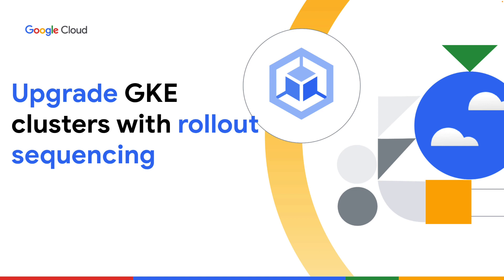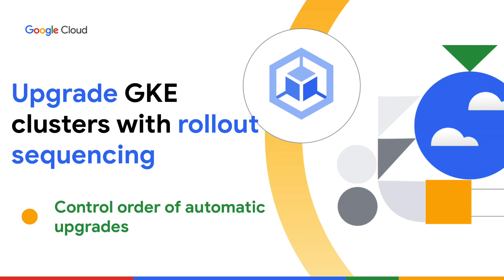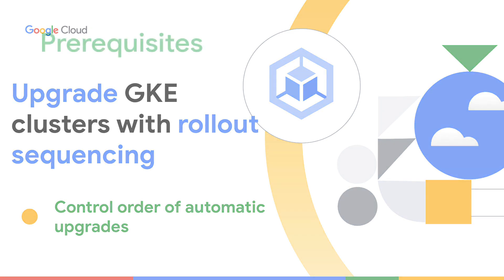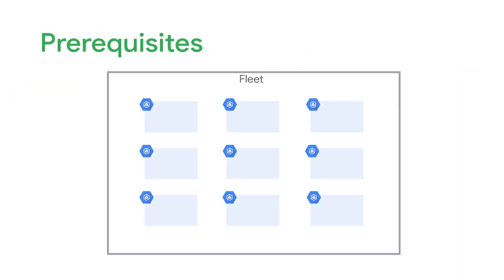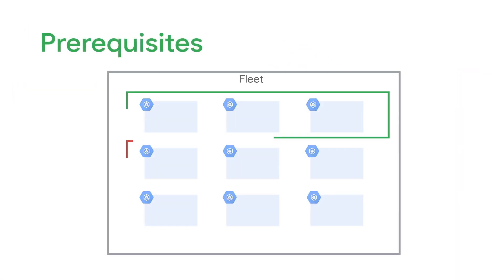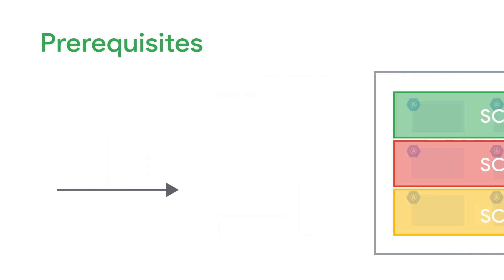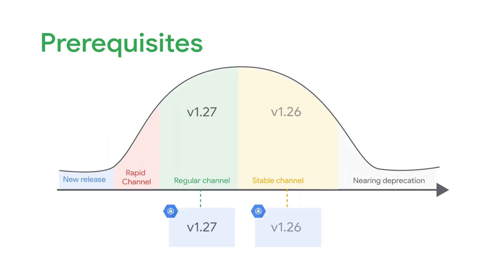Welcome to this video where we'll discuss how to manage your cluster upgrades with rollout sequencing. With rollout sequencing, you can manage the order of automatic cluster upgrades across your environments. Before we continue, you should already be familiar with the concepts of fleets and scopes, as well as how clusters are upgraded with release channels.